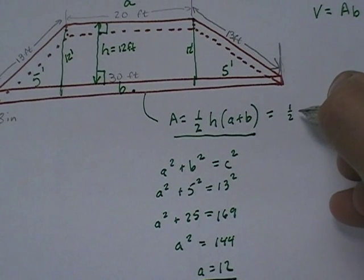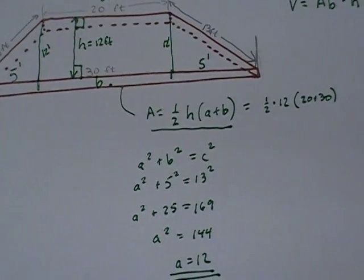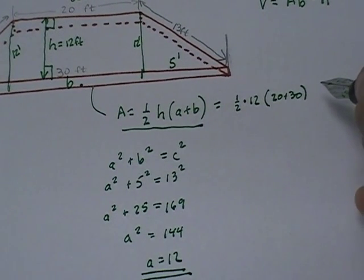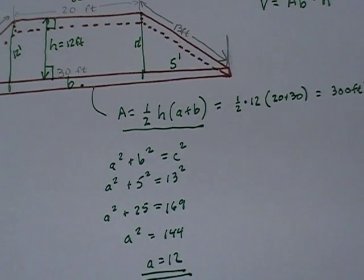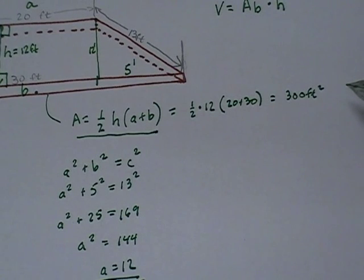So I say, 1 half times 12 times 20 plus 30. So what does that give me? That gives me 6 times 50, which is 300 feet squared. That's the area of this trapezoid.